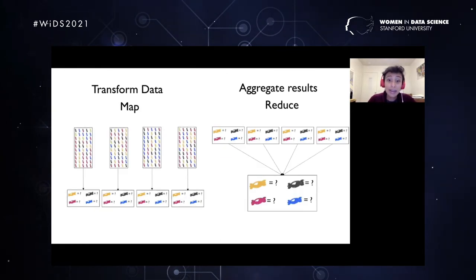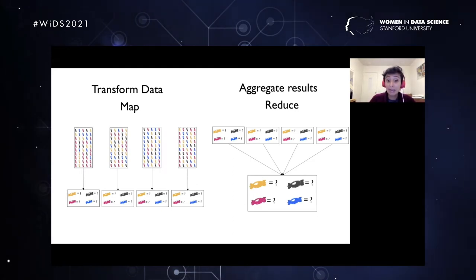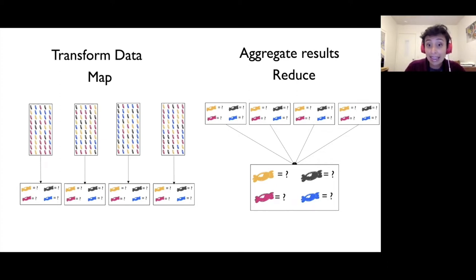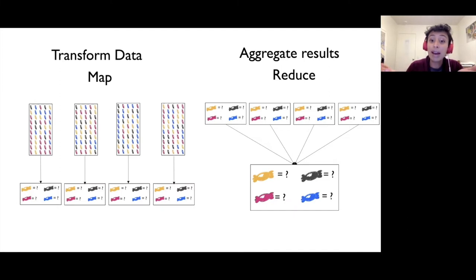How does that compare to our candy example? In the first option, it was a data parallelism example: we took our problem, divided it into four different pieces, and each person counted the proportion of candies in their piece — transforming the data set into a different data set, which is a map. Then for aggregating all results to find the total proportion, we took each person's computed proportion and aggregated it into a single proportion — that is a reduce. So that's an example of map and reduce.